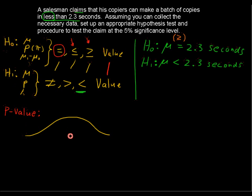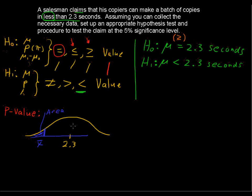A good way to understand the p-value is with a picture — the normal distribution. Put 2.3 as our null hypothesis mean. If we get some sample mean x-bar less than 2.3 seconds, the p-value is the area to the left of our sample mean on the normal distribution. We'd use either a t-distribution if we have the sample standard deviation, or the standardized normal with a z-score if we're given the population standard deviation. This left-tail area applies when the alternative hypothesis says the mean is less than some value.